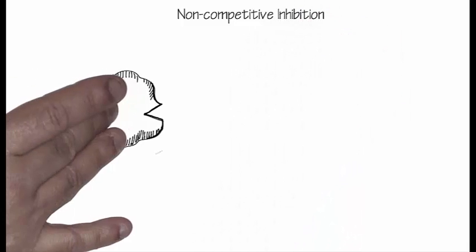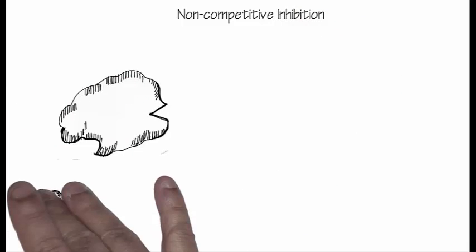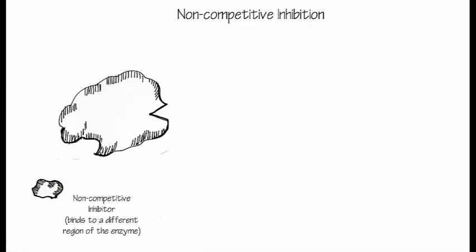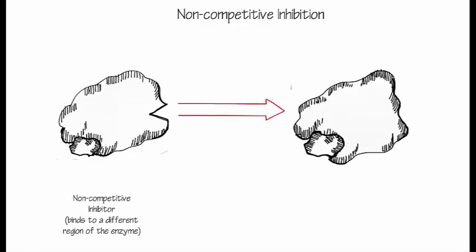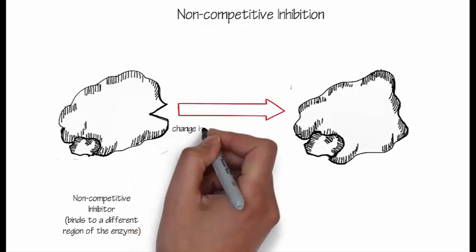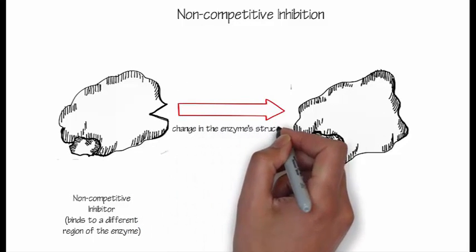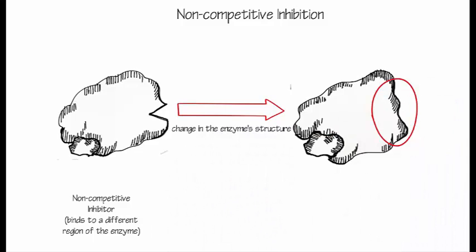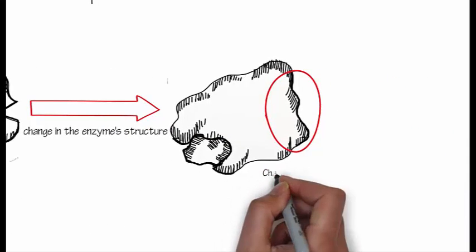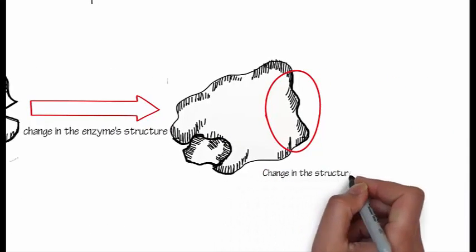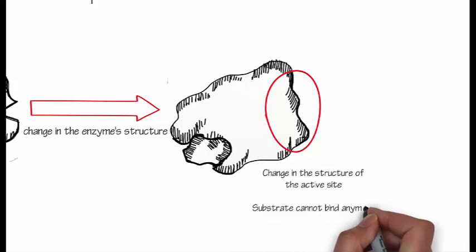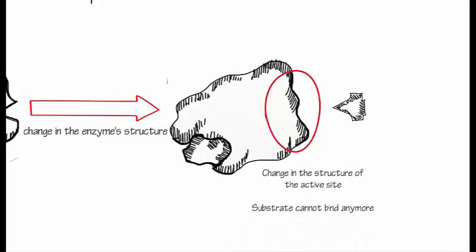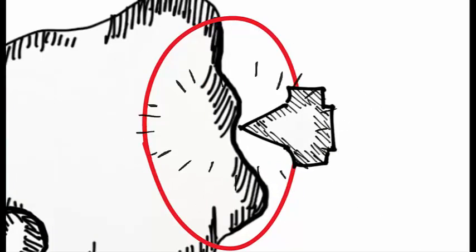In this case, a molecule binds to the enzyme in a way that changes its tridimensional structure. This change affects the structure of the active site and the substrate can no longer bind to it.